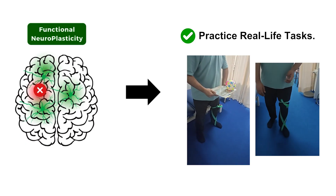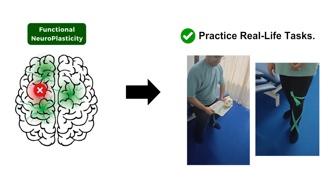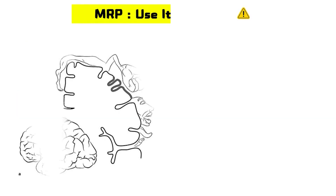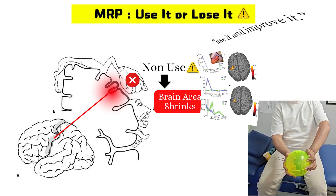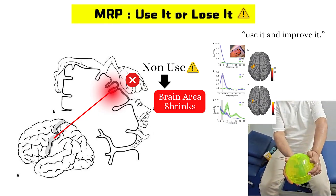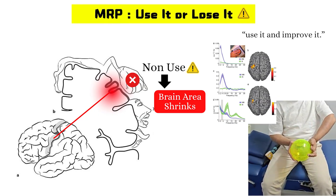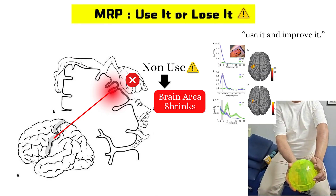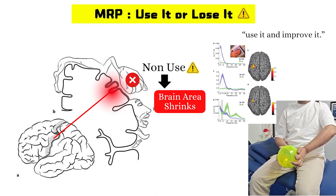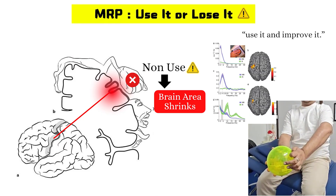We don't just move the limbs — we help the brain relearn how to control movement. If a patient doesn't use their affected side, the brain map for that area shrinks: use it or lose it. This is also called learned non-use, and it happens very commonly after stroke. But if the patient practices movements with the affected side, even imperfectly, those brain areas light up and grow.